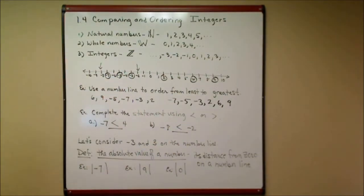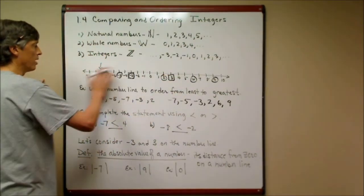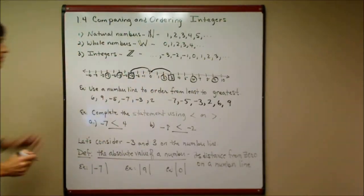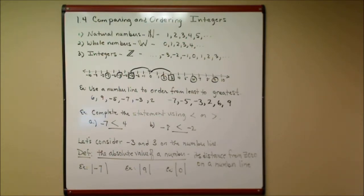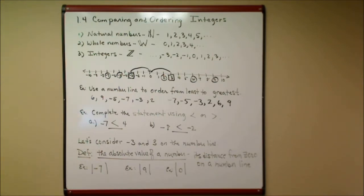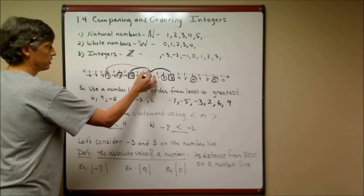Now look at negative three and positive three. These two numbers are each three units away from zero on the number line — one is to the left, one is to the right, but both are three units from zero. This leads us to a key definition: the absolute value of a number is its distance from zero on the number line. Whether it's positive or negative, the distance is considered positive. These bars around the number represent the absolute value symbol.